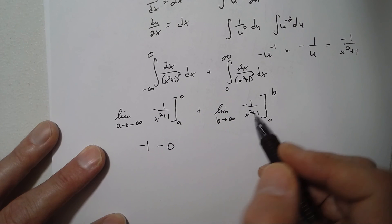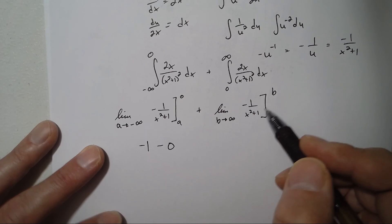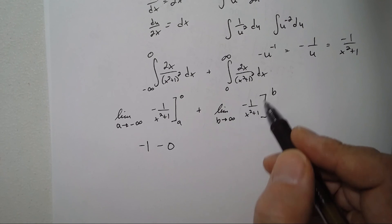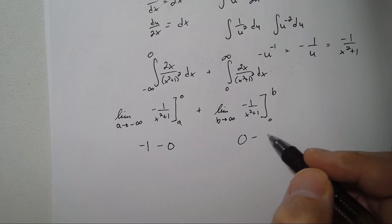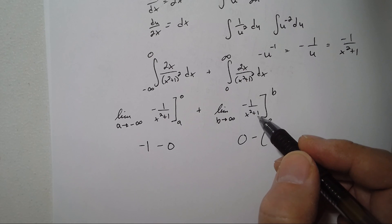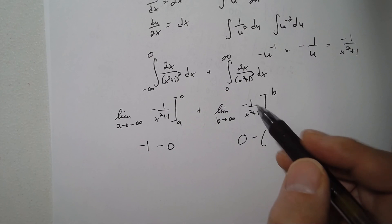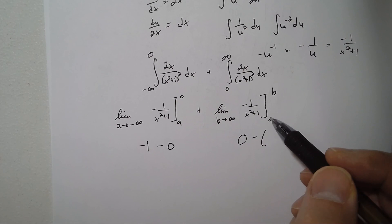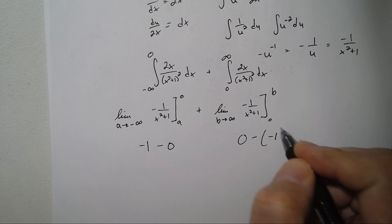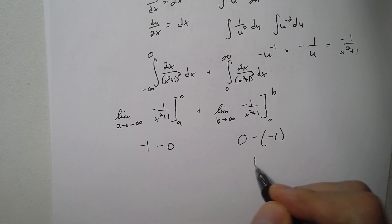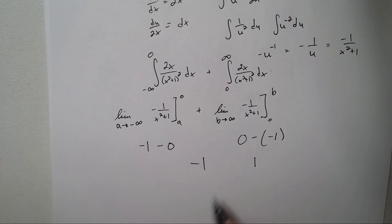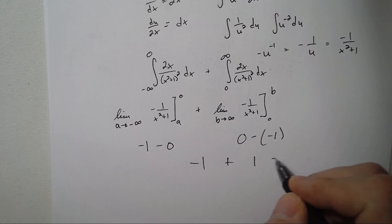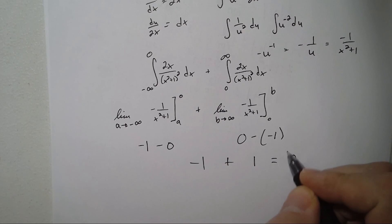If I drop in infinity, because b is approaching infinity, I get negative 1 over infinity, which is 0. Minus, if I plug in 0 here, I get negative 1 over 1, which is negative 1. So this ends up being 1, this ends up being negative 1. So if I have negative 1 plus 1, our answer is 0.